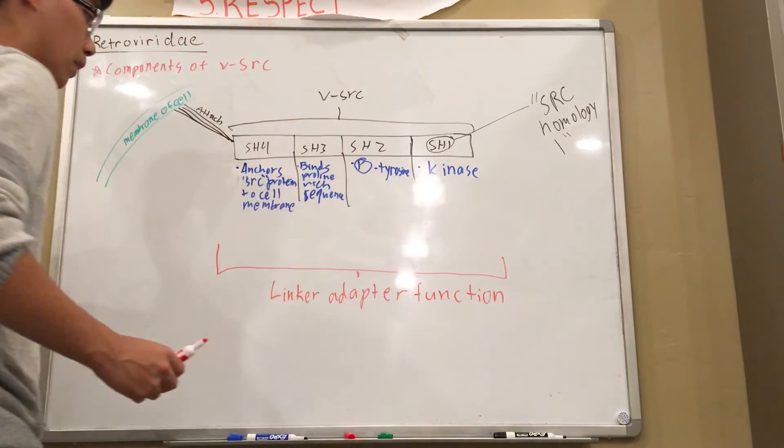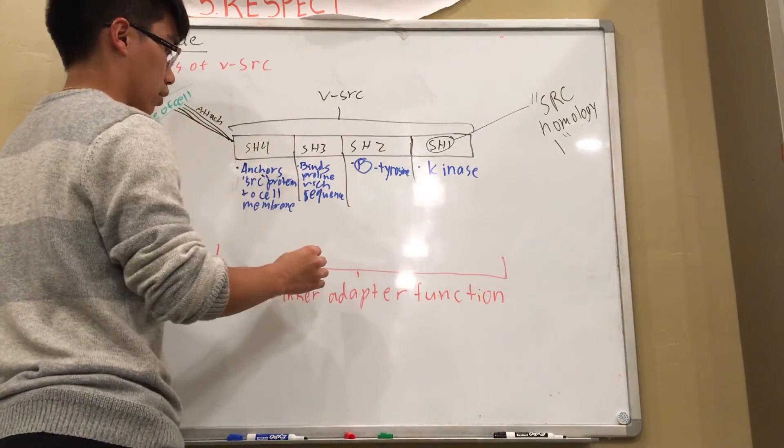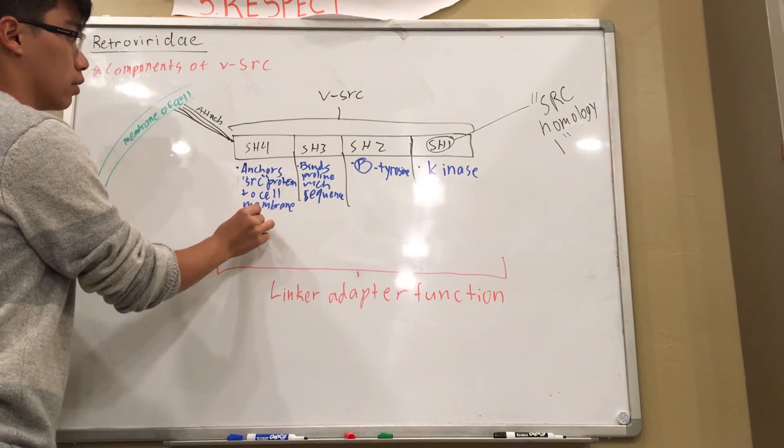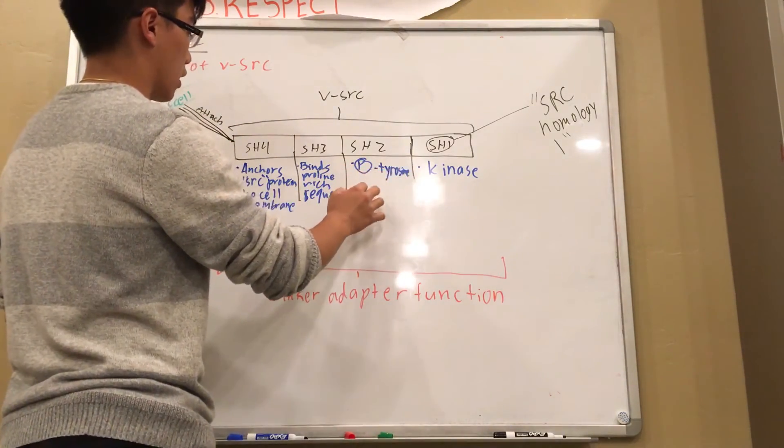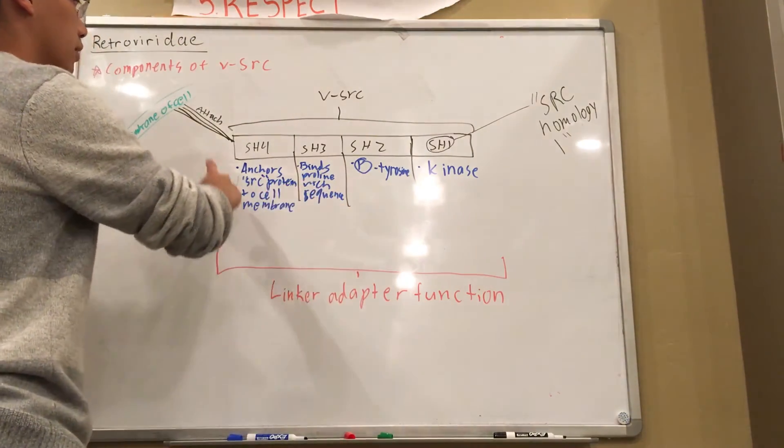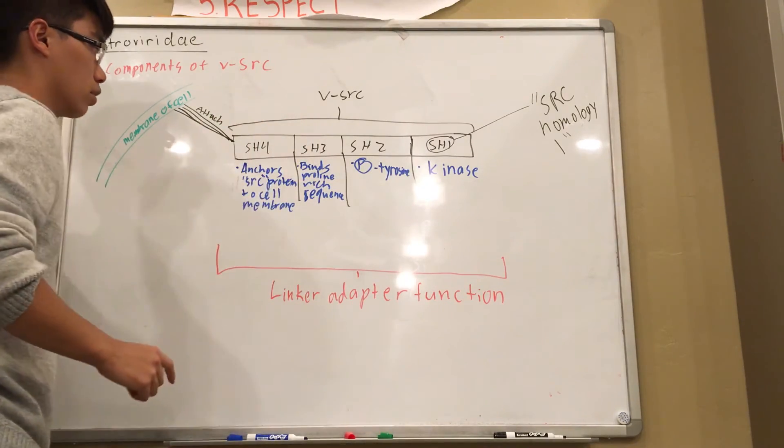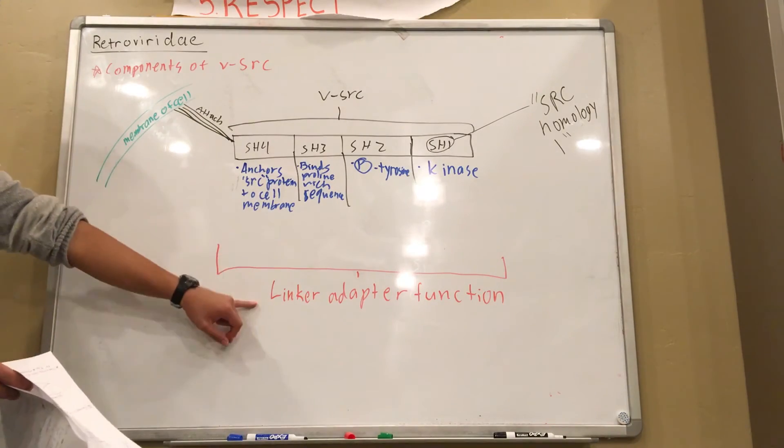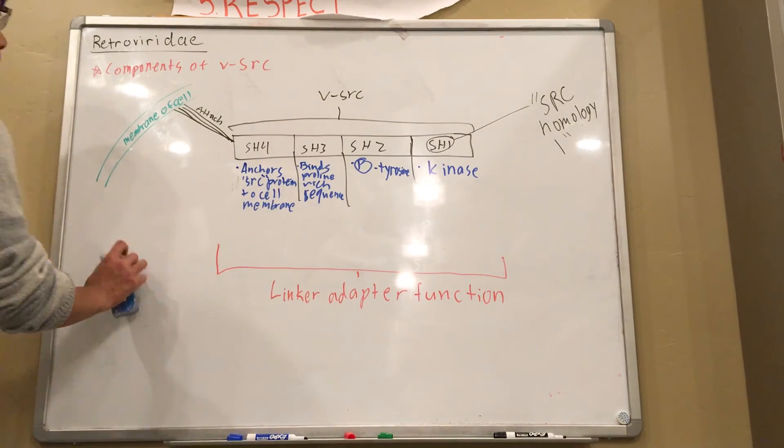And I forgot to ask Dr. Sears about this, but I can only guess now, teaching it to you guys, that it's called a linker-adapter function because these four components are linked together. It also sticks here, so it links itself to the cell membrane, and it sort of adapts, the gene adapts itself to mess up the cell's growth cycle. If you want to, you can search this up. I didn't see this in the textbook. I didn't see that term in the textbook, but it was in the lecture, so I'm putting it there.